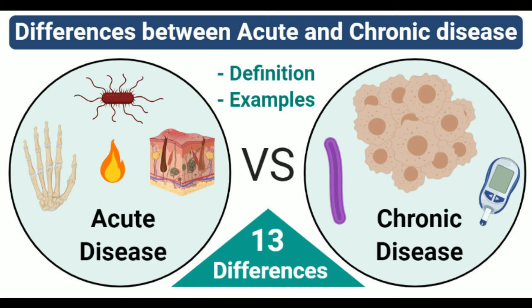Examples of acute diseases: Typhoid, Jaundice, Bone fracture, Burns, Heart attack, Cholera, etc. Examples of chronic diseases: Diabetes, Cancer, Tuberculosis, Arthritis, etc.